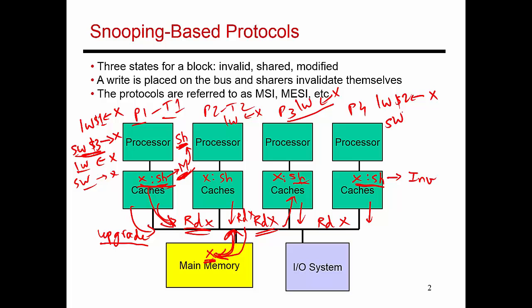Then P4 decides to do a store into X. It has a cache miss and places a request on the bus saying it doesn't have the block X at all — this is a write X request placed on the bus. All of the other caches see that somebody is doing a write, so they downgrade their permissions and go from shared to invalid state. Main memory provides the latest copy of X on the bus; it gets picked up and placed in P4's cache in modified state, giving P4 full read and write permissions.